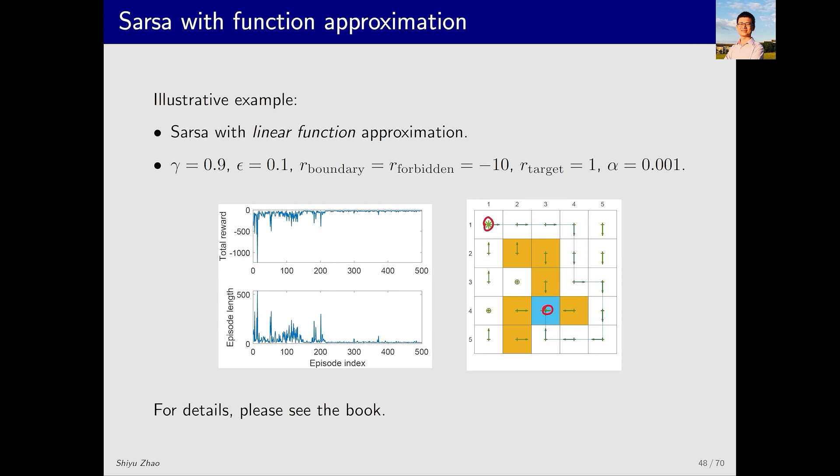As we mentioned earlier, the task is to start from one state and reach the target state. For more details you can refer to my book. You can see that if we follow the direction with the higher probability, it eventually can reach the target state. The policy in other states might not be optimal, but that's okay because our goal isn't to find the optimal policy for every state. On the left you can see the convergence process. In the beginning the return is negative but it gradually increases over time. Similarly, the episode's length is long initially because the policy isn't very good, so it may take a lot of detours. Eventually the episode's length will gradually shorten and converge.